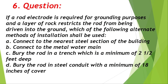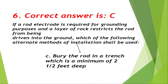Question number 6: If a rod electrode is required for grounding purposes and a layer of rock restricts the rod from being driven into the ground, which of the following alternate methods of installation shall be used? A. Connect to the nearest steel section of the building, B. Connect to the metal water main, C. Bury the rod in a trench which is a minimum of two and a half feet deep, D. Bury the rod in steel conduit with a minimum of 18 inches of cover. Correct answer is C, bury the rod in a trench which is a minimum of two and a half feet deep.